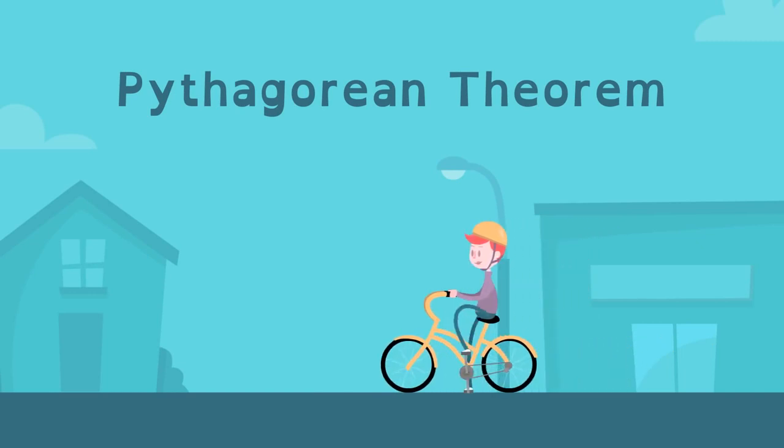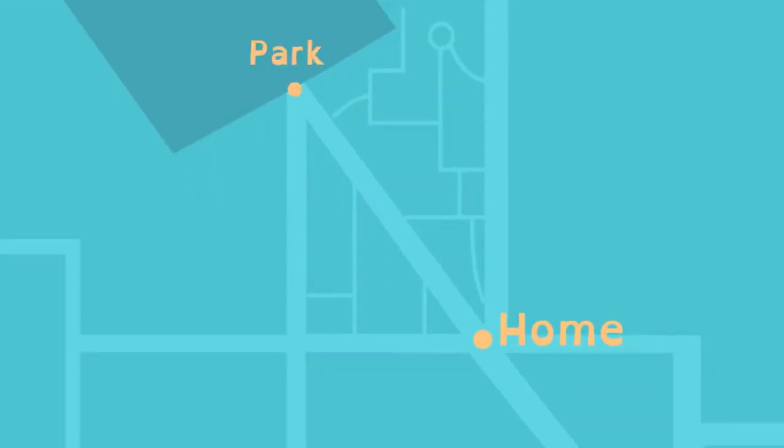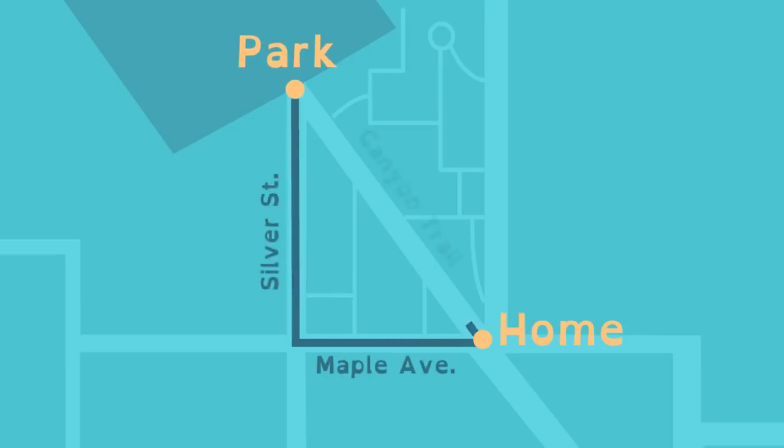The Pythagorean Theorem helps people solve real-world problems. Lucy usually bikes to the park along Maple Avenue, then up Silver Street. Is Canyon Trail shorter? She knows the two legs, Maple Avenue and Silver Street, are three and four miles long.